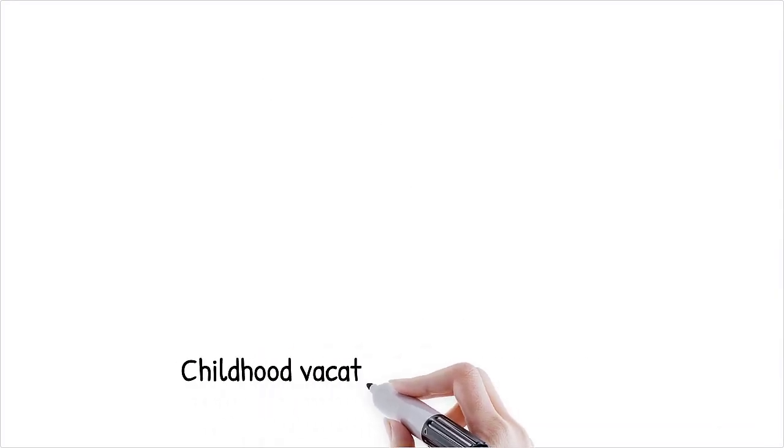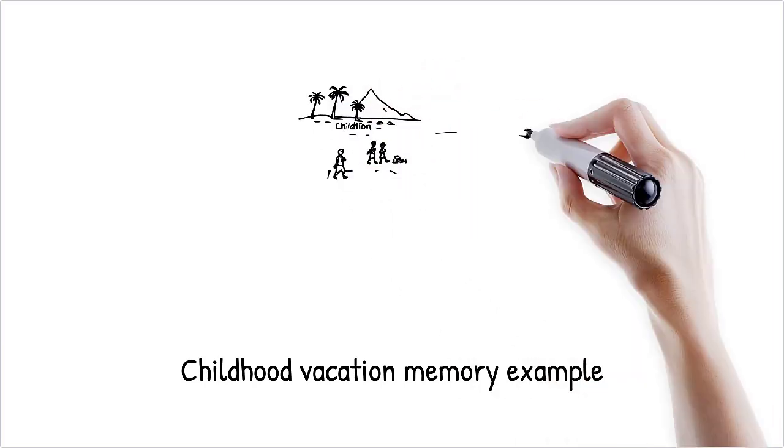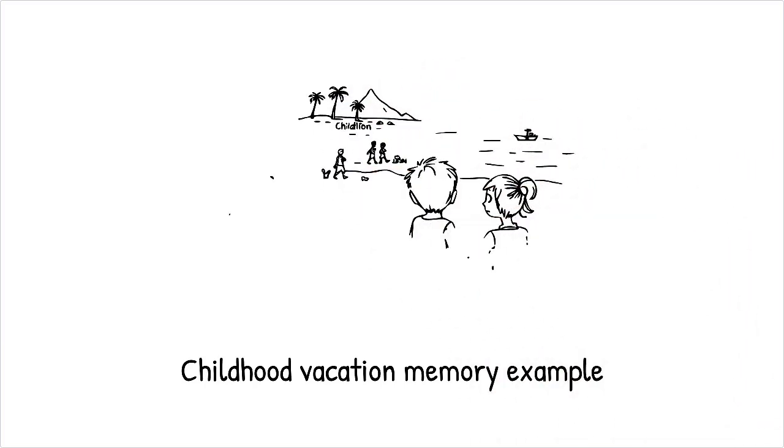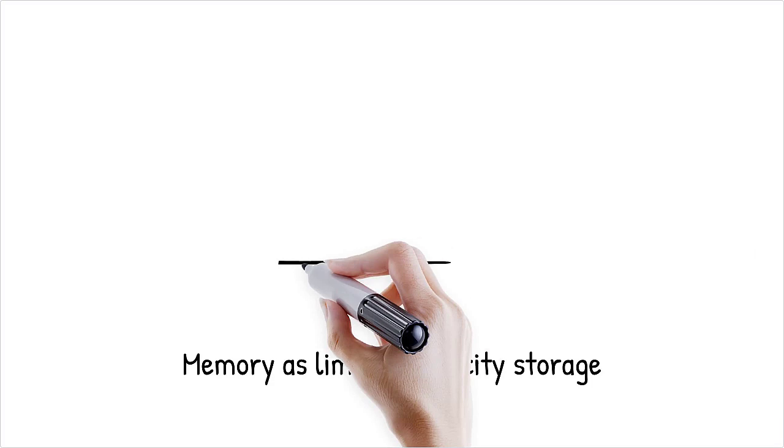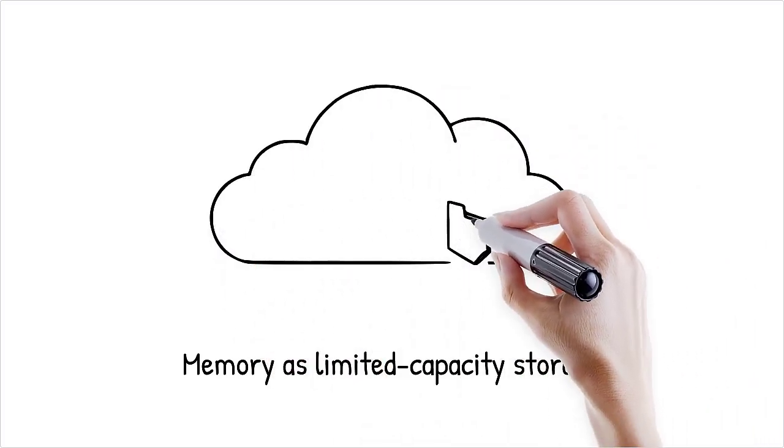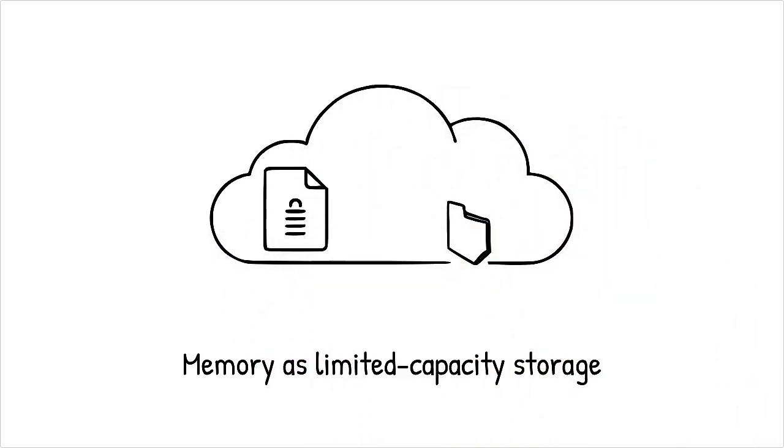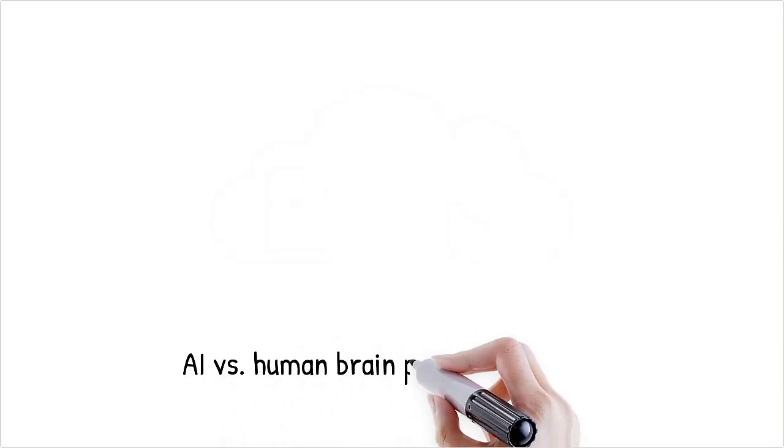A person may remember a childhood vacation vividly, but forget what they ate for lunch last Tuesday because the brain prioritizes meaningful events. Memory is like a limited capacity cloud storage system. Important data is kept while unneeded files are erased to free space.